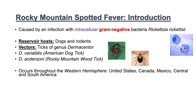Rocky Mountain Spotted Fever and its causative bacteria, Rickettsia rickettsii, are located within the Western Hemisphere — generally in the United States, Canada, Mexico, Central and South America, and in some northern areas of South America such as Colombia.